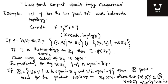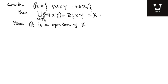Now the question is: is X compact? For X to be compact, every open covering of X must have a finite subcover. But this is an open cover of X which does not have a finite subcover. Because if you assume that it has a finite subcover, you will get a contradiction.